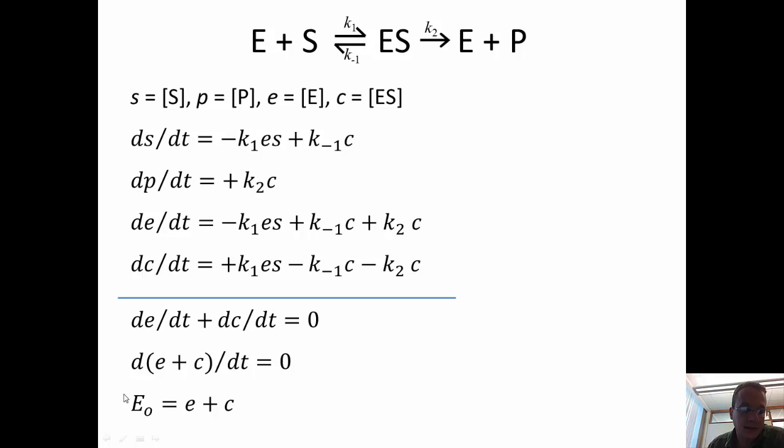Or, another way of saying that is that there's some constant total enzyme concentration, which is the free enzyme plus the complex, and that E zero doesn't change. That's a constant.